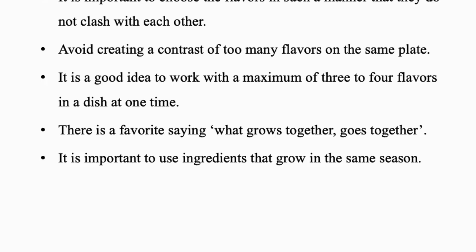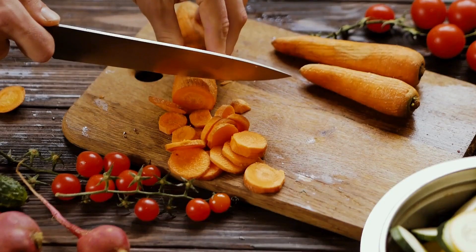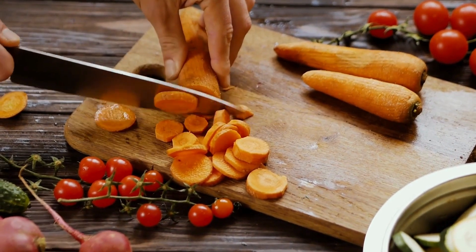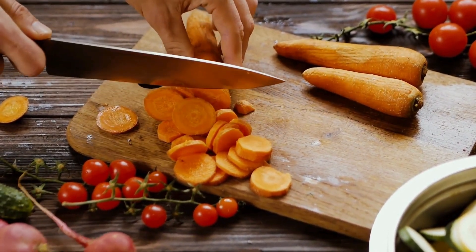There is a favorite saying: what grows together goes together. It is important to use ingredients that grow in the same season. Shape has its own features — plan for a variety of shapes and forms as well as color. For example, you probably do not want to serve Brussels sprouts with meatballs; green beans and whipped potatoes might be a better choice. Cutting vegetables into different shapes gives great flexibility — carrots, for example, can be cut into dice, rounds, and sticks.